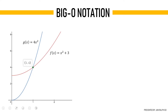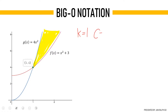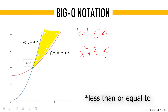Now let's demonstrate the definition with a graph. In big O notation, f of x is the lower bound of c times g of x. Let us say that f of x is x squared plus 3 and g of x is 4x squared. When we graph it, we can see that at the point where x is greater than 1, f of x is big O of g of x. In any values of x greater than k, it satisfies the equation of big O notation. In this case, k is equal to 1 and c is equal to 4, producing the inequality x squared plus 3 is less than or equal to 4x squared.